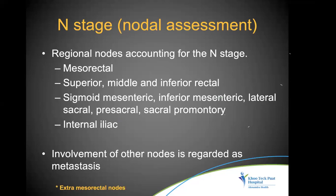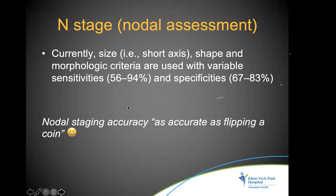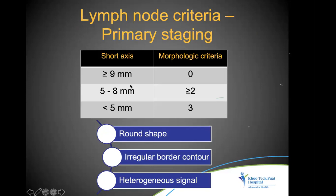Regional nodes for N-staging include mesorectal nodes, superior, middle and inferior rectal nodes, and sigmoid mesenteric nodes — any other nodes are considered metastases. Currently, short-axis size combined with morphological criteria are used for nodal assessment, though these have variable sensitivity and specificity. Nodal staging accuracy is sometimes described as equivalent to flipping a coin — approximately 50%.